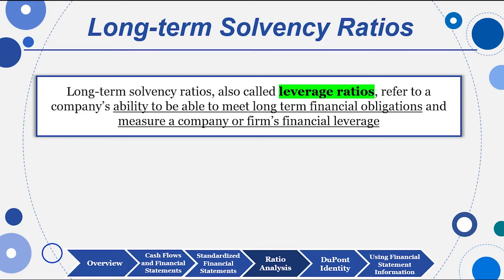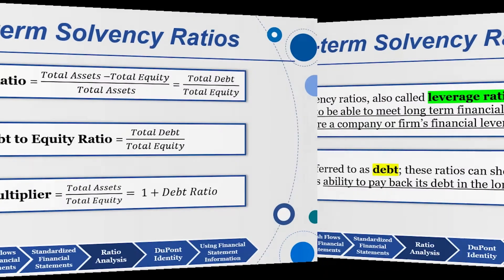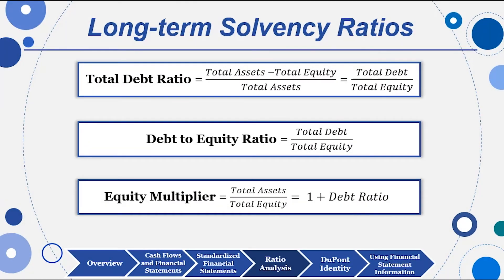Long-term solvency ratios look at long-term obligations such as debt or leverage. If you see the term 'financial leverage,' we're talking about debt — how heavily indebted is this company? Can we pay back our debt in the long term? A company like Apple — when they have $215 billion of cash and marketable securities — why do they even need debt? We'll see that by examining the Apple financial statements.